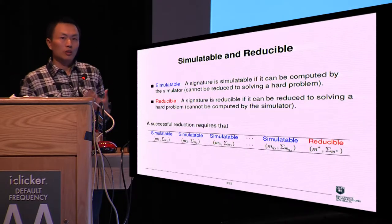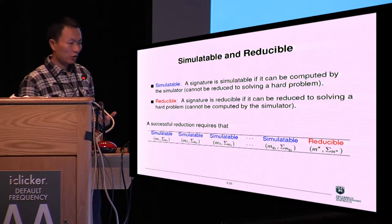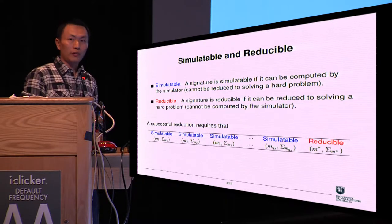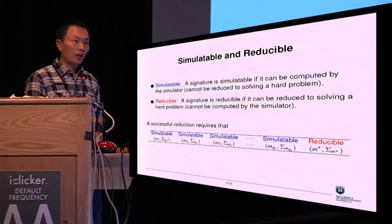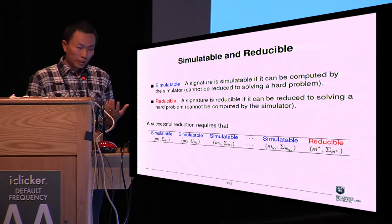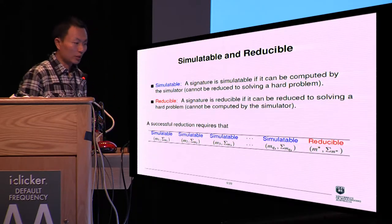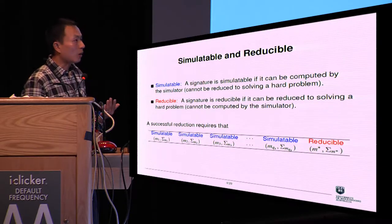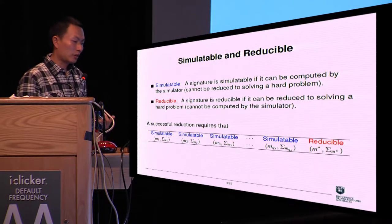In perfect signature simulations, all signatures can be classified into two sets: simulatable and reducible. A signature is simulatable if it can be computed by the simulator — because it's computable, such a signature cannot be reduced to solving a hard problem. A signature is reducible if the simulator can use it to solve a hard problem; such a signature cannot be computed by the simulator. In a successful security reduction for digital signatures, all queried signatures must be simulatable and the forged signature must be reducible. This is the essential condition for a successful security reduction.